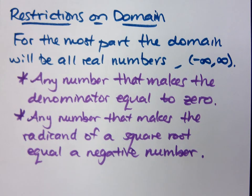Later on, when we see other types of functions, we'll have other restrictions on the domain. But for right now, anything that makes the denominator equal to zero, or anything that would make your radicand become negative, you have to restrict those.